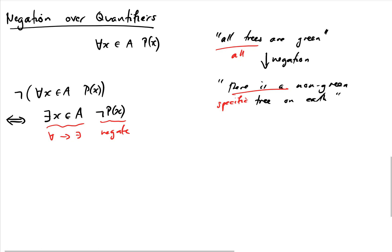So the same template works for both types of quantifiers: flip the quantifier from 'there exists' to 'for all' or vice versa, then negate the statement inside.